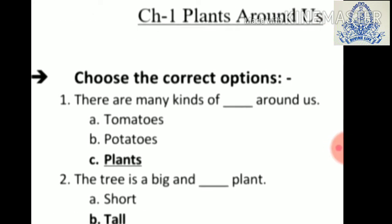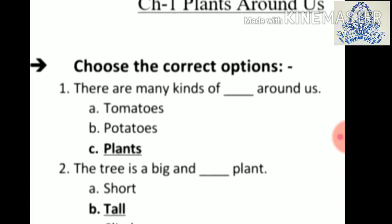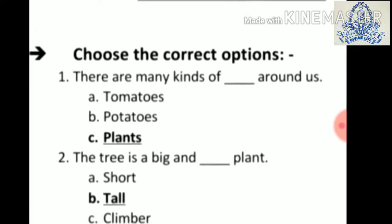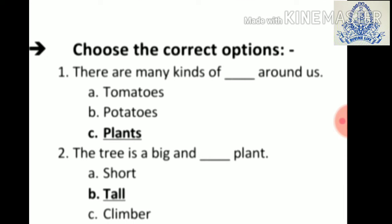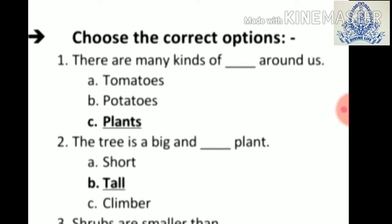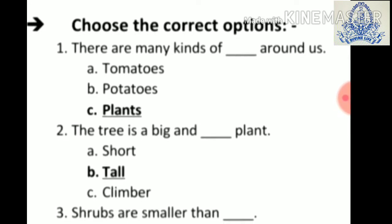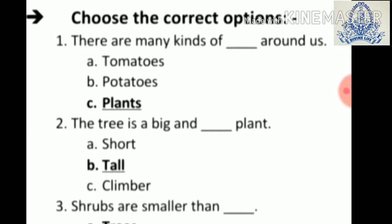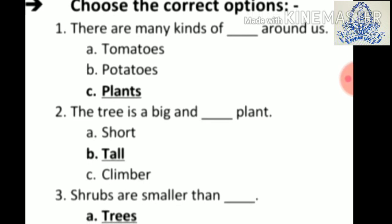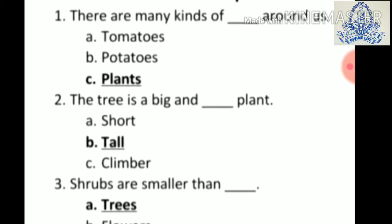Now write down the heading: Chapter 1 — Plants Around Us. Choose the correct options. First: there are many kinds of dash around us — a) tomato, b) potatoes, c) plants. Answer is c) plants. Second: the tree is a big and dash plant — a) short, b) tall, c) climber. Answer is b) tall.